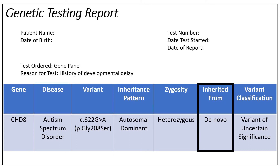Testing parents can help us understand if a genetic variant was passed from a biological parent to the child, or if the genetic variant is new in the child. In this example report, we see the inherited from is de novo, meaning this was a new variant in the child.